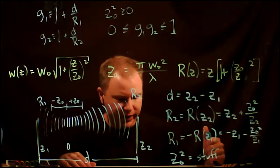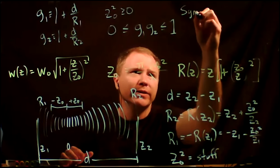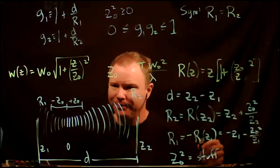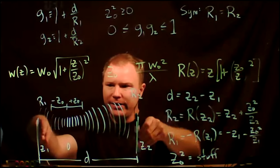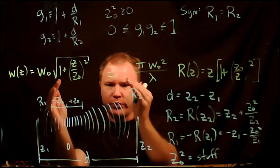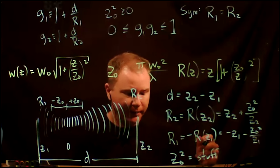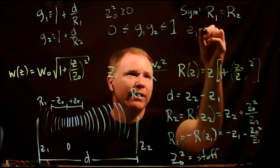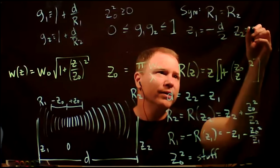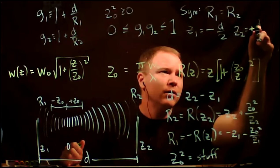For the symmetric case where R₁ = R₂, symmetry tells us the beam waist must be at the center, so z₁ = −d/2 and z₂ = +d/2. Calling the common radius R, z_naught works out to (d/2) times the square root of (2R/d − 1).